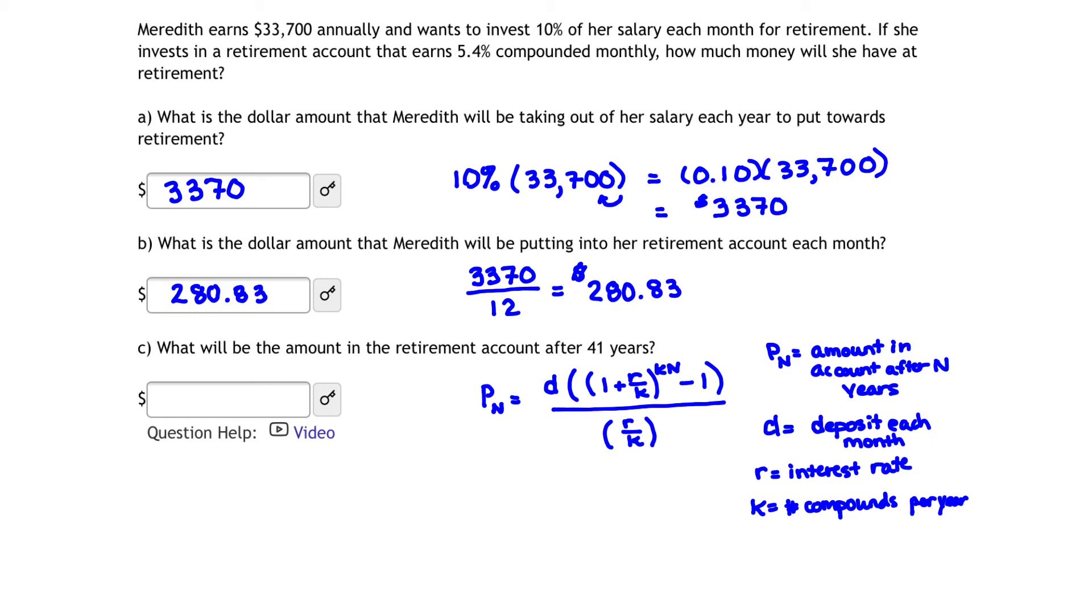So P sub N is what we're looking for, right? We are looking for the amount in the account after 41 years. Specifically, we could say that we're looking for P sub 41. Now, what's D? D is our deposit each month. Well, each month from part B, we see that we're adding in or depositing $280.83.